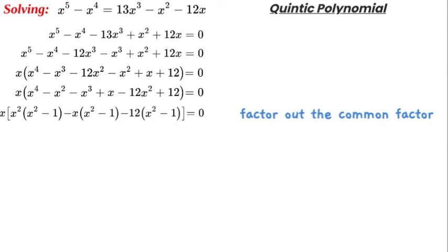We can simplify it even further and write x times (x^2 - x - 12) times (x^2 - 1) = 0.